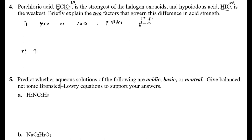The second factor: higher electronegativities of the central atom increase acid strength. So if you look here, chlorine is much more electronegative than iodine. The same reasoning applies: if you have a chlorine in that bundle, it's going to help pull the electron density away from the hydrogen, making it more proton-like and easier to dissociate. Very, very simple.